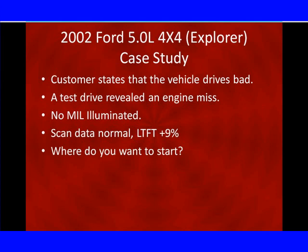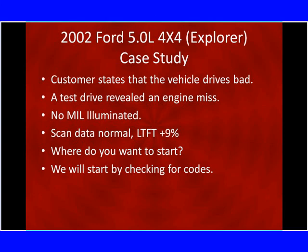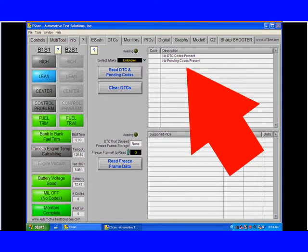Where would you start? What would you do? You have all the information you're going to have about this vehicle. We've driven it. We've got no codes. Scan data looks normal. We all start by checking codes, and they're not there. Here's our scan tool — we hooked it up, no pending codes, nothing even holding out fixing to show up.